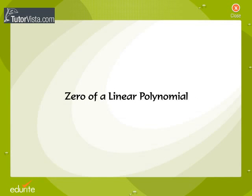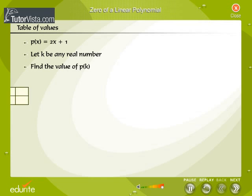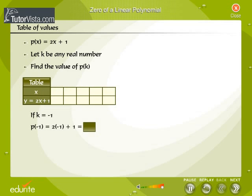Zero of a linear polynomial: table of values. Consider a linear polynomial p(x) = 2x + 1. Let k be any real number. Replace x by k in p(x) and find the value of p(k). Key in the answers.